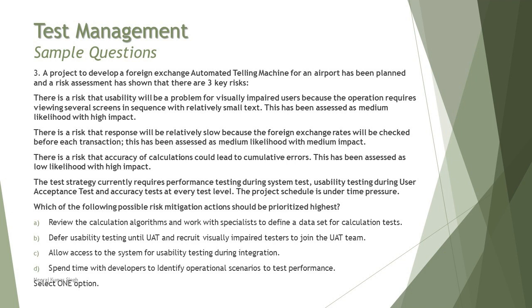The test strategy currently requires performance testing during system test, usability testing during user acceptance testing, and accuracy testing at every test level. The project schedule is under time pressure. Which of the following possible risk mitigation actions should be prioritized highest? We already have the risks, the assessment, the likelihood and impact. Based on the strategy, we need to synchronize the risk assessment with the options given.